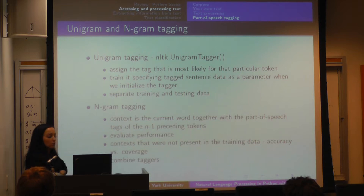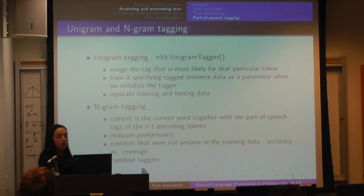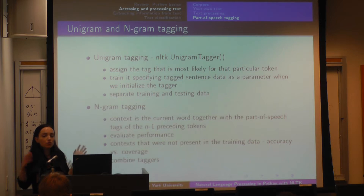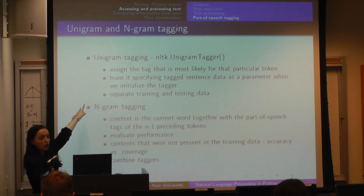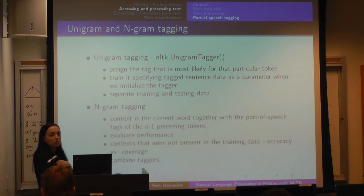So what is the distinction between unigram tagging and n-gram tagging? With unigram tagging, you assign the tag that is most likely for a particular token, then you train it, specifying the tagged sentence data, and then you separate training and testing data to see how well it performs. This approach is not taking the context into account — it's just looking at how likely it is for some word to be a noun.